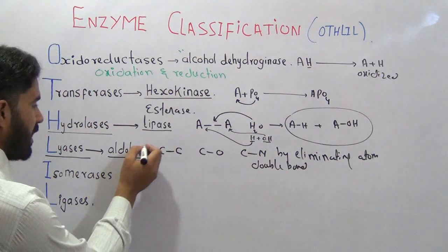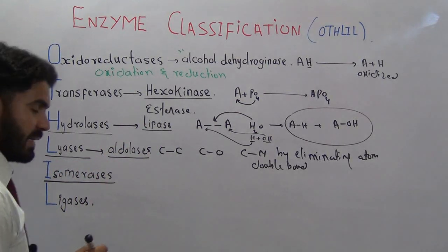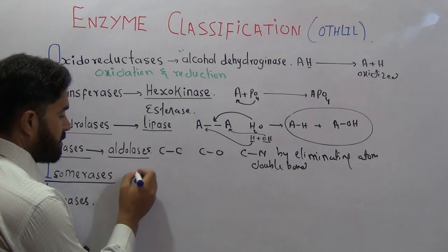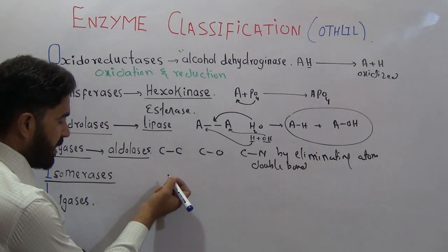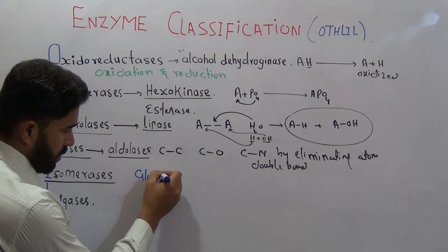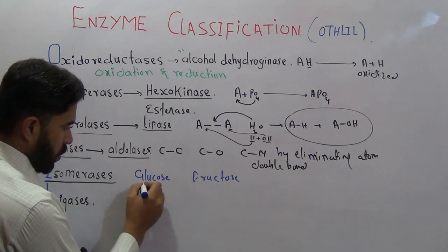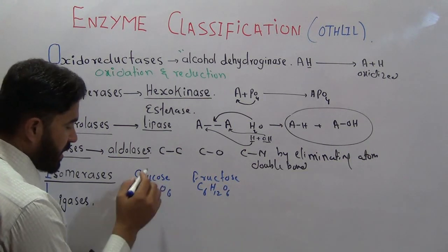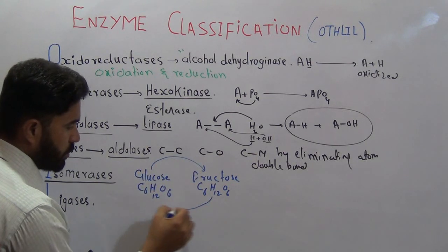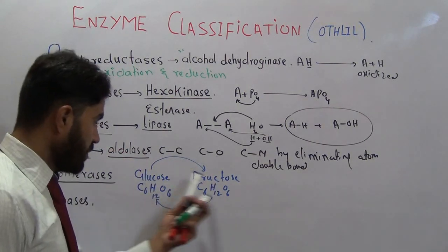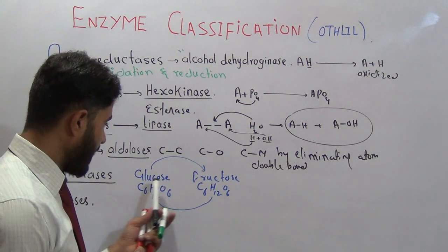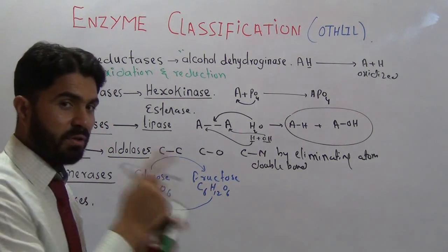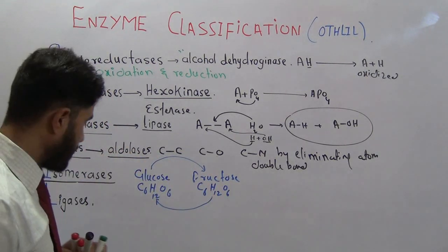Isomerases are those enzymes involved in isomerization — the formation of isomers. For example, glucose has the formula C₆H₁₂O₆ and fructose also has the formula C₆H₁₂O₆. The conversion of glucose into fructose or fructose into glucose is called isomerization. Glucose and fructose are isomers of each other because they have the same molecular formula but differ in structure. Enzymes involved in isomerization reactions are collectively called isomerases.